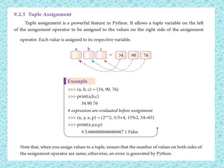In the print function with x, y, z, p: x equals 2 to the power of 2 gives 4. Next, 5 divided by 3 plus 4 gives approximately 5.66. Then 15 modulus 2 gives 1. And 34 greater than 65 evaluates to False. So in the output we can gather these four values.